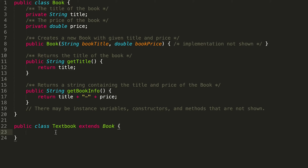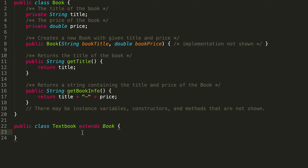Remember that when a class is a subclass, it inherits any instance variables that the parent class has. So despite the fact that a Textbook also has a title and a price, we don't actually need to declare them inside our Textbook class because those exist within the Book class. However, there is one piece of information that differentiates a Textbook from a Book, and that is the edition number. So we're going to want to have an instance variable for that.